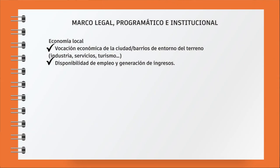Local economy: when doing housing, if you just design units without looking at the local economy, you have a big problem. You need to look at the economic vocation of the city and the surrounding neighborhoods — is there industry, services, tourism? This can help you target those who will live there and know their needs and demands, and link housing to the economic vibrancy of the city. Also assess available job opportunities and income generation opportunities around the area — this applies both to new housing and to informal settlement upgrading.